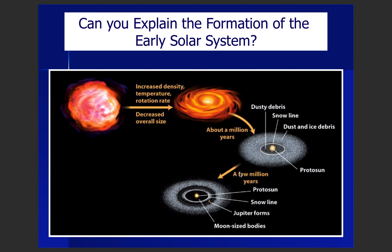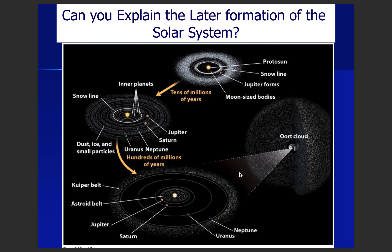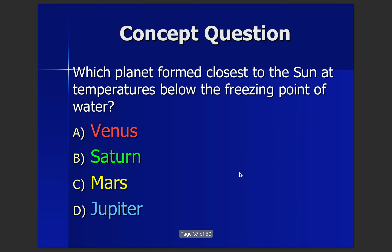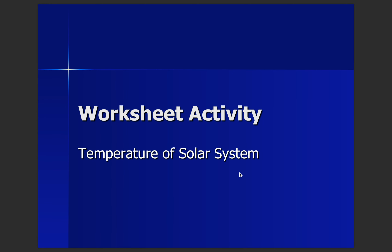Take some time to think about whether you can explain the formation of the early and later solar system stages from the images. Jupiter is the only planet that formed closest to the sun at temperatures below the freezing point of water — if you need a refresher, go back and look at the temperature scale graph. You can go ahead and work on the temperature of the solar system worksheet for this week.